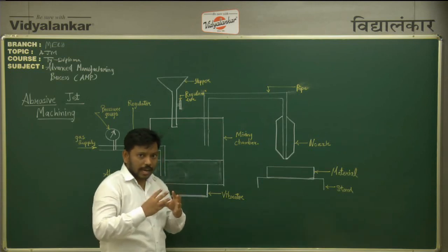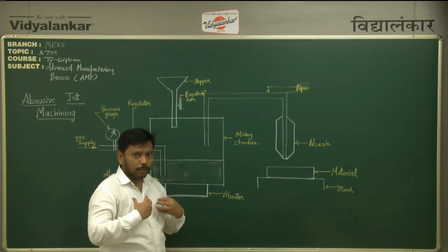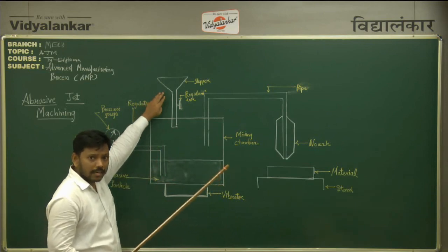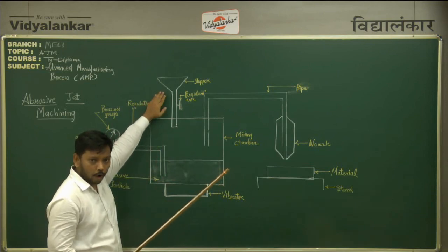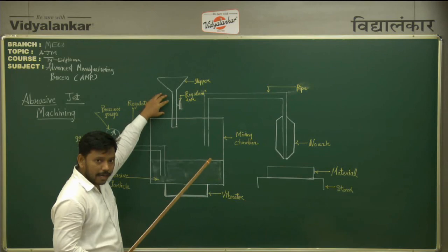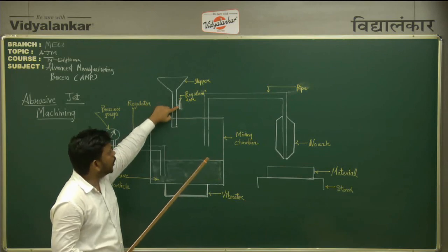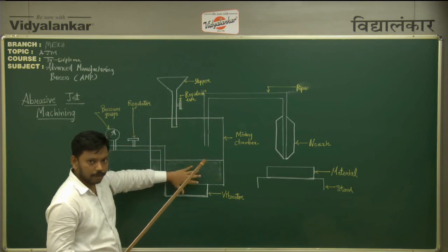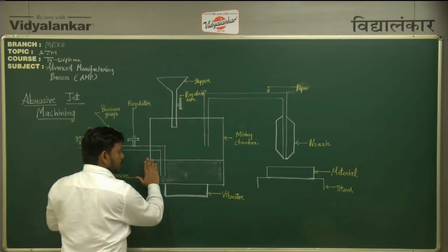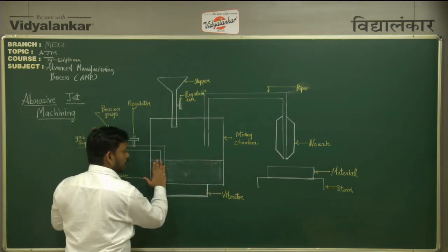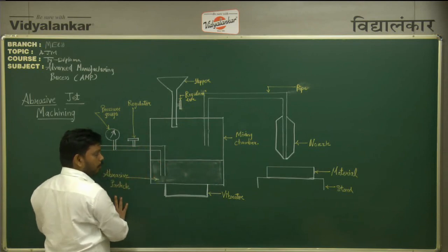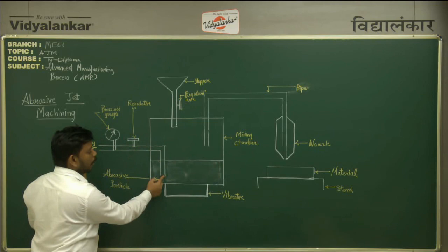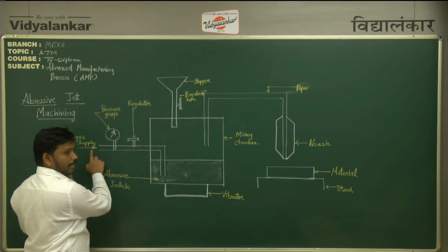Now let us understand how this particular machine functions. First, we place a certain amount of abrasive particles in the hopper, and then depending upon the requirement, with the help of a regulator, we allow the particles to settle down into the mixing chamber. As you can see, this particular mixing chamber is partially filled with the abrasive particles.